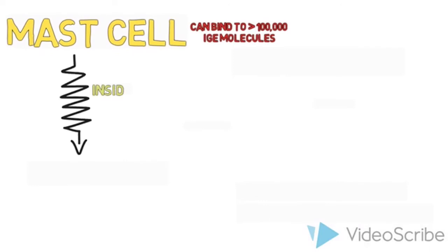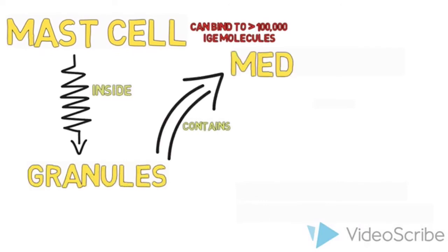Inside the mast cell are granules that contain chemicals known as mediators. When an allergen combines with an IgE molecule in the mast cell, the mediators are released.